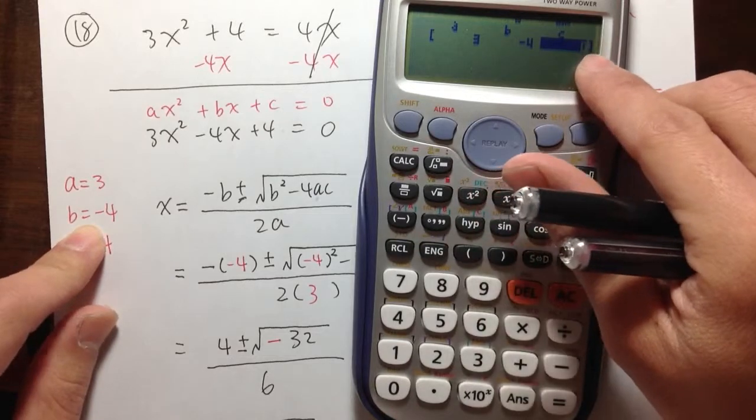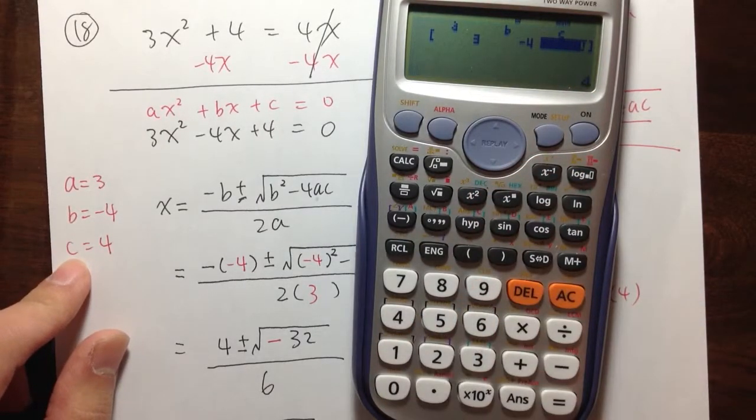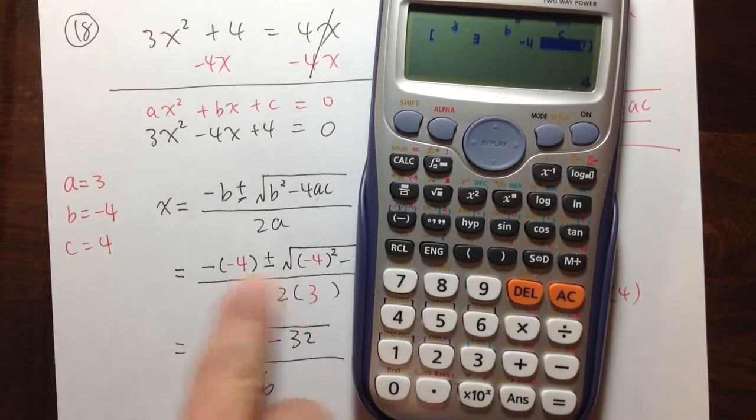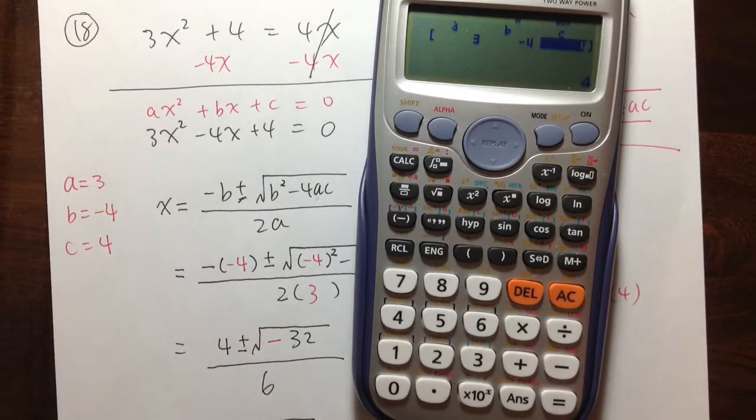And then for c, I need positive 4. So hit 4, equal. So we don't need to use the quadratic formula. We don't need to punch this into the calculator. We just need to go to the equation solver function.